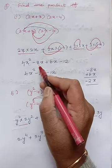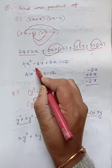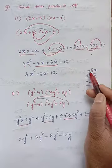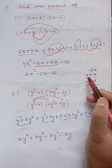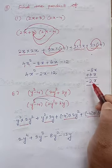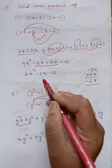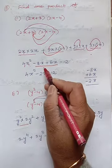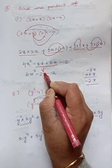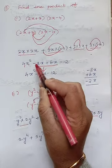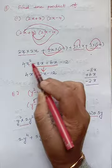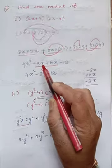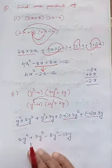Here we have a like term: minus 8x plus 6x. Different sign — subtract and write the sign of the greater number. So x and x are like terms. x square and x are not like terms, so we can add only the x term with x term.